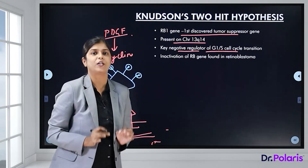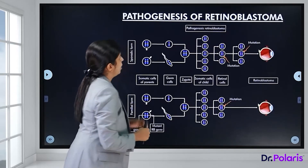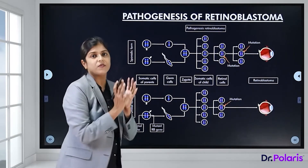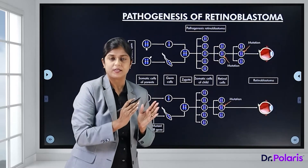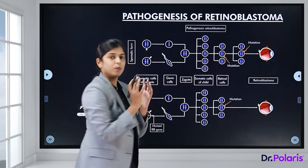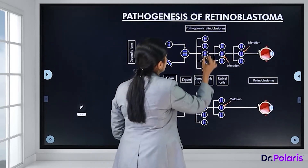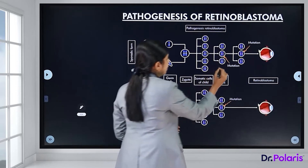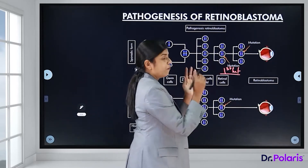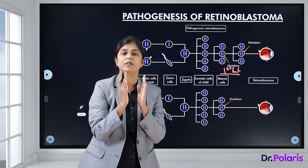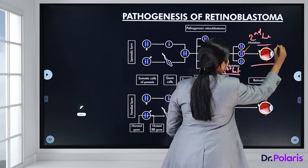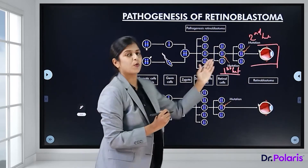In the sporadic form, there is no mutation at birth — both alleles of the gene are normal. Sometime in life the first hit occurs in one allele, and then for malignancy to develop a second hit is required in the second allele, leading to the development of retinoblastoma.